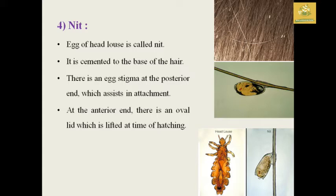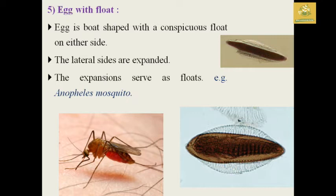The egg of head louse has a cementer at the base of the hair, called an egg stigma, where the posterior end assists in attachment to hair. The anterior end has a lid which lifts at the time of opening for the louse nymph's emergence. The egg with float is board-shaped and mainly seen in Anopheles mosquito, which lays eggs in water. The board-shaped structure has expanded lateral sides for its floating mechanism.